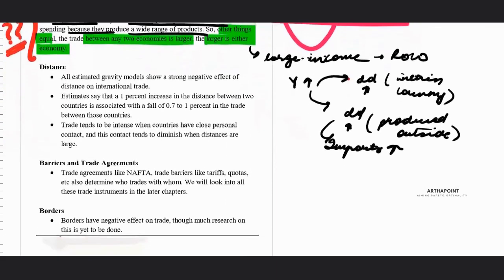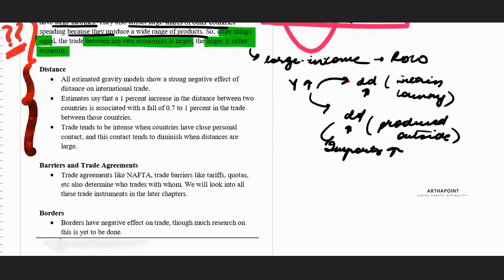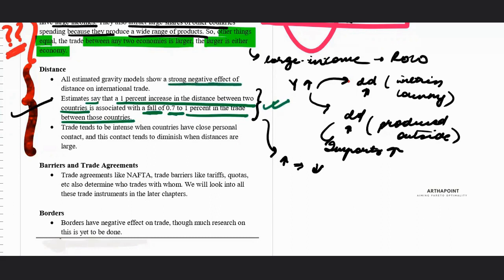Now let's see about the distance. So in the past, it has been seen that actually this is true that as the distance between two countries increased, the trade between the countries decreased. So estimates say that 1% increase in distance between two countries was associated with a fall of 0.7 to 1% in the trade between those countries. So this is actually true. This is what empirical data states, that there is a strong negative effect of the distance on international trade.